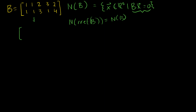Row 2 minus row 1. Row 1 doesn't change — it's just 1, 1, 2, 3, 2. And then row 2 minus row 1: 1 minus 1 is 0, 1 minus 1 is 0, 3 minus 2 is 1, 1 minus 3 is minus 2, 4 minus 2 is 2. We're almost there. This is a free variable right here, and this is a pivot variable right here — we have a 1.